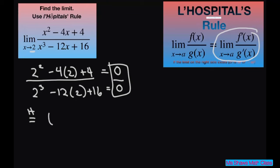We're going to take the limit as x approaches 2. What you do is take the derivative of the numerator and then the derivative of the denominator. So the derivative of the numerator is going to be 2x minus 4. And the derivative of the denominator is going to be 3x squared minus 12.